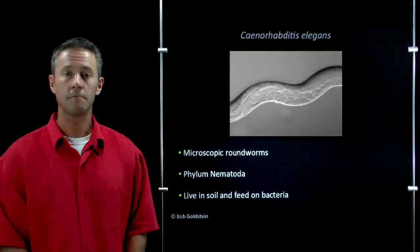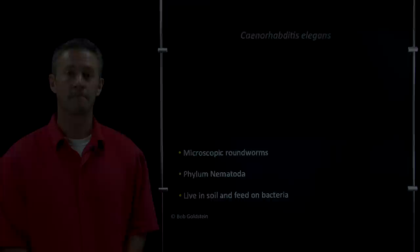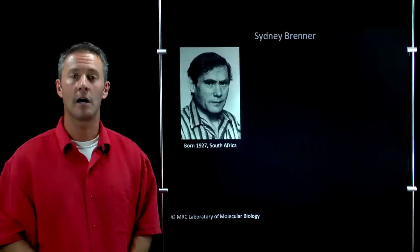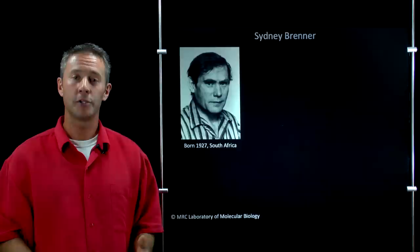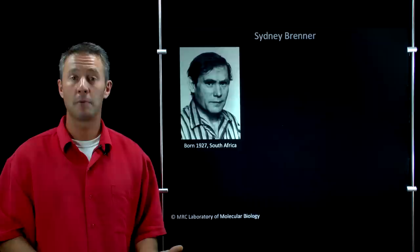But before getting to that, I want to tell you a really interesting story about how C. elegans was first established as a model organism. This is, in my view, one of the most remarkable biologists in the history of science. His name is Sidney Brenner. He was born in 1927 in South Africa. What makes him so remarkable is that he made multiple really fundamentally important contributions to biology over the course of his career across multiple different disciplines, ranging from molecular biology to developmental biology to genomics.